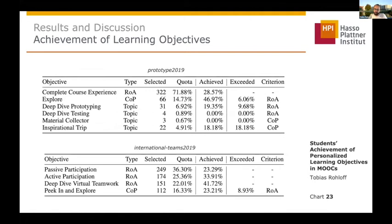We also looked at whether students exceeded their objectives, possibly indicating increased motivation over the runtime of the course. We defined a criterion — for example, if a topic objective was chosen and a certificate was additionally achieved, we counted that as an exceeded objective. There were some users who achieved that. Only two objectives weren't chosen by many users in the first course — the deep dive testing and the material collector one — and we don't know why, though the teaching team may have had a different intention than the learners.